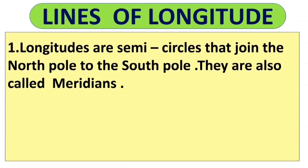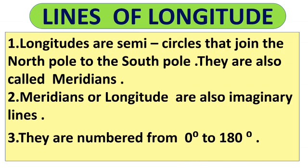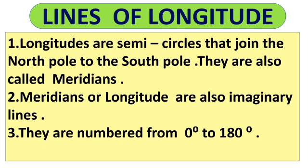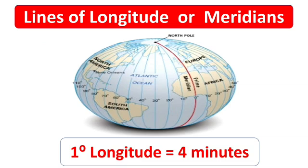Now we will learn about lines of longitudes. Longitudes are semicircles that join the North Pole to the South Pole. They are also called meridians — meridians and longitudes are the same thing. Meridians or longitudes are also imaginary lines. They are numbered from 0 degrees to 180 degrees. All meridians are equal in length. The lines coming from the North Pole to the South Pole as seen in the picture are called longitudes or meridians.